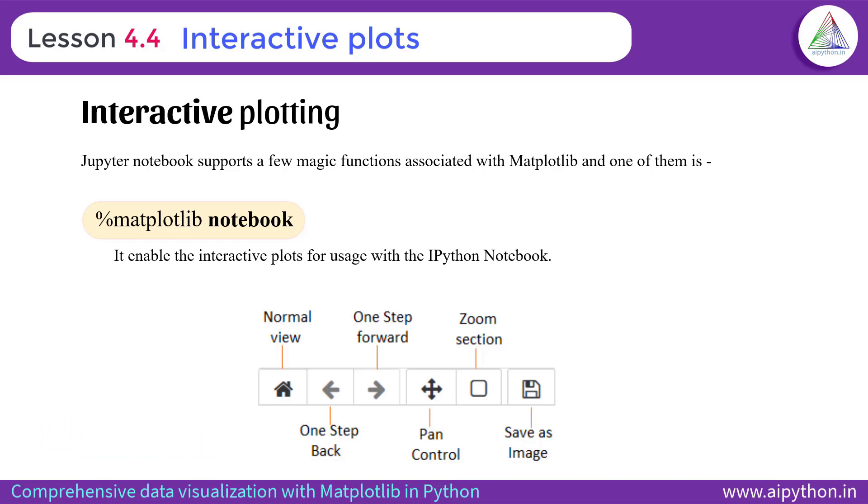For example, you can zoom the graph across x and y axis. You can pan the graph. You can save the image. And you can move backward and forward steps whatever you have performed during the data visualization. And there is a static button where you can even go back to the original graph mode.